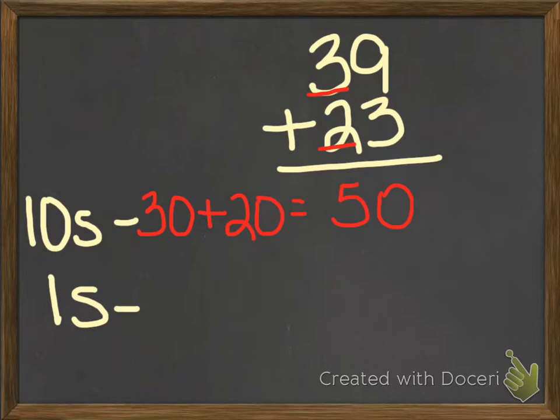Then we're going to look at our ones column, where we have our 9 and our 3. So we're going to add our 9 plus our 3, and we're going to get 12, and now we're going to add those two together. So our answer is 62. Let's try another one.